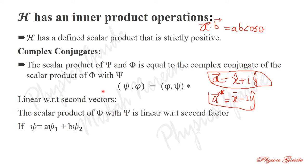Linearity: ⟨psi, phi⟩ = ⟨phi, psi⟩* — the scalar product is linear with respect to the second vector phi. The scalar product of phi with psi is linear with respect to the second vector. As proof: if psi equals a·psi₁ plus b·psi₂, where psi₁ and psi₂ are two vectors and a and b are scalars, then adding the scalar-vector products gives psi.